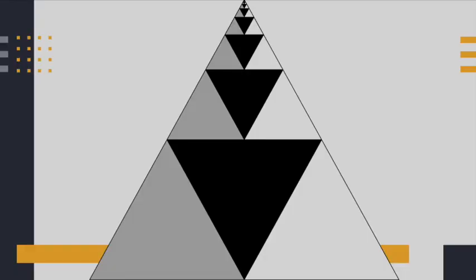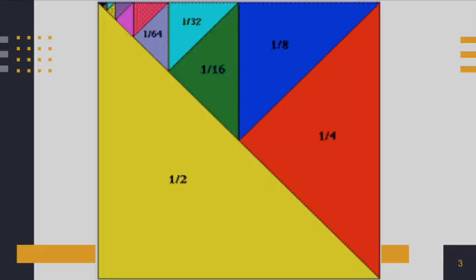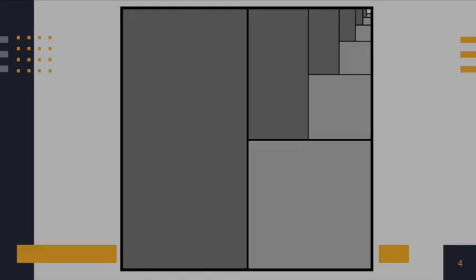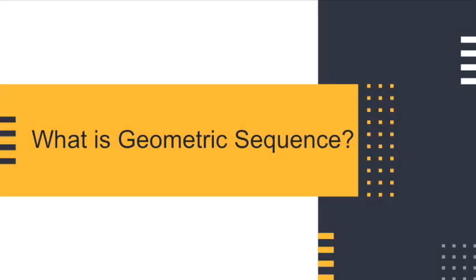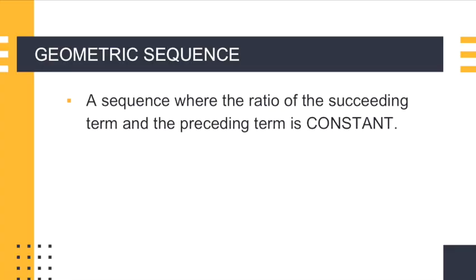Geometric sequence can be seen in art pieces, in roof designs, in tiles, and many more. A geometric sequence is a sequence where the ratio of the succeeding term and the preceding term is constant.